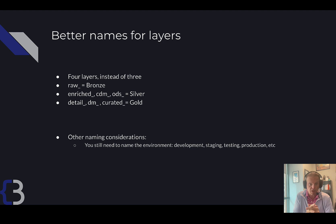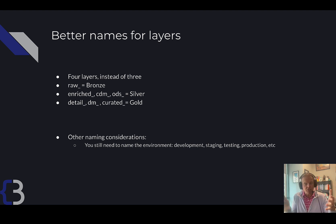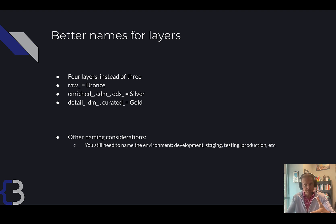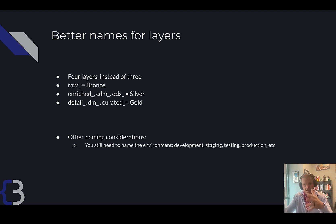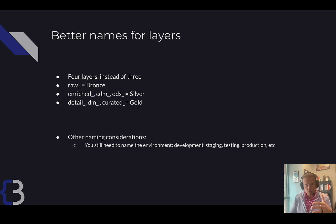You also want to name things according to the environment — development, staging, testing, and production. Development is where we code things; staging and testing is where we share it with others to see if they like it; and production means don't change this constantly because it's actively being used by lots of users. We need a very methodical way of getting things from development all the way through the pipeline into production.